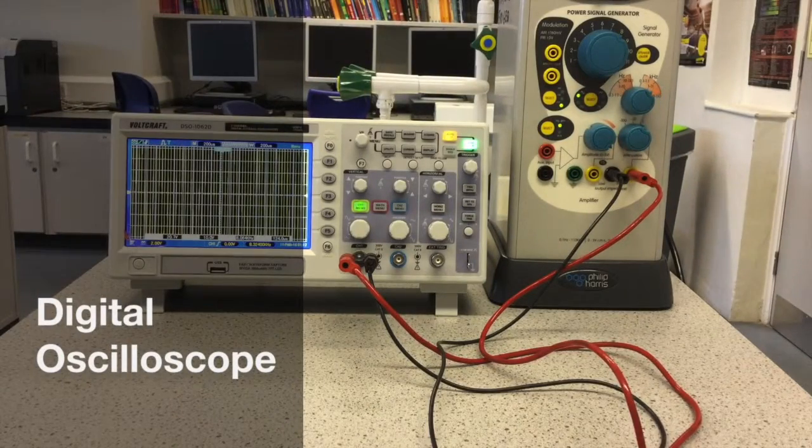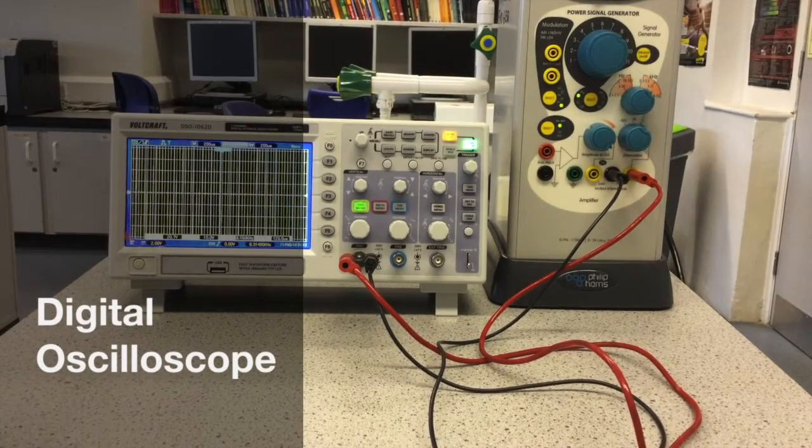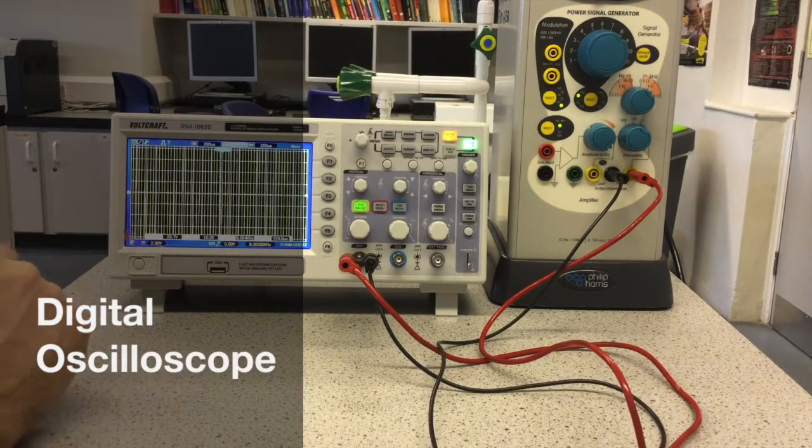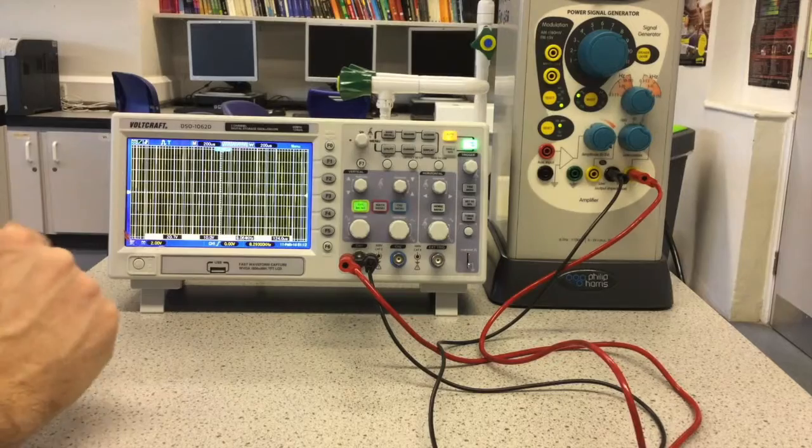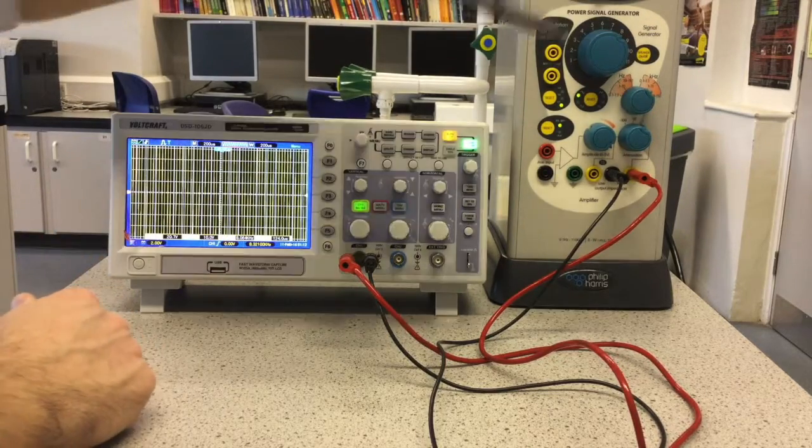This is a digital oscilloscope which has all the same functionality as an analogue oscilloscope plus some extra features. The signal generator is producing a signal of about 8000 Hz here.